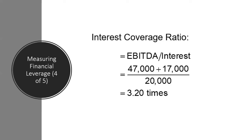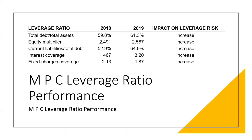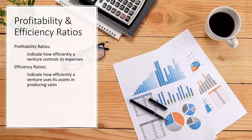The interest coverage ratio uses earnings before interest, taxes, depreciation, and amortization (EBITDA) divided by interest expense. Looking at the trend, the debt ratios are increasing across all measures, which indicates the company is not doing well — obligations are growing day by day.